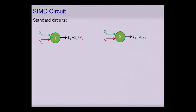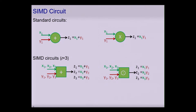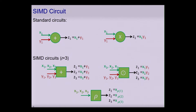We need to slightly modify the underlying circuit model. Standard MPC protocols operate over arithmetic circuits with multiplication and addition gates, each getting two inputs and producing one output. Packed secret sharing protocols operate on SIMD circuits, where gates still take two inputs but these are now wire bundles, and operations are done pointwise on these bundles — pointwise addition and pointwise multiplication. We also sometimes allow a permutation gate that gets one input bundle and rearranges values inside it. This is how SIMD circuits evaluate many copies on different data.